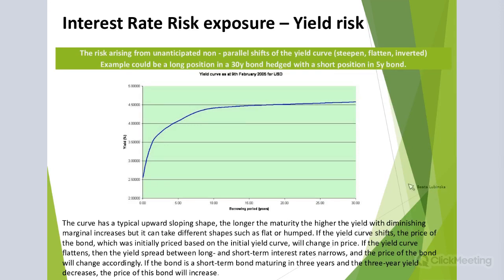The next important risk category — maybe one of the most important — is yield risk. This is particularly important when the bank has longer duration on the asset side or is taking a longer duration in the banking book. This is the case when banks have fixed-rate mortgages or fixed-rate treasury bonds, and they are funded by floating or shorter-term repricing liabilities. Beyond 12 months, there is definitely a difference in movements between different tenors on the interest rate curve.